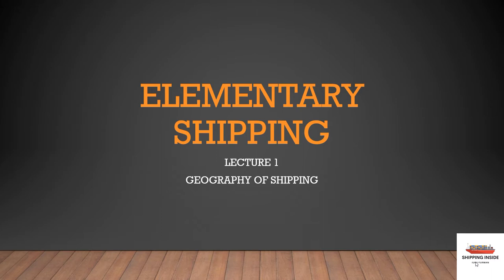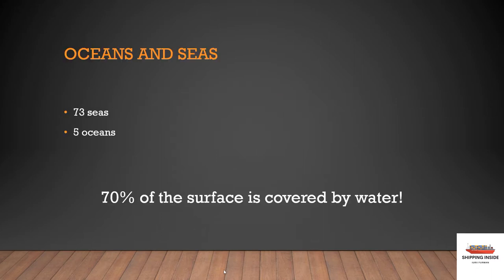In the first lecture we are going to speak about geography of the shipping industry. A couple of words about oceans and seas. On the earth there are 73 seas and 5 oceans, and about 70% of the surface is covered by water. It is logical that 90% of all goods are transferred by sea.